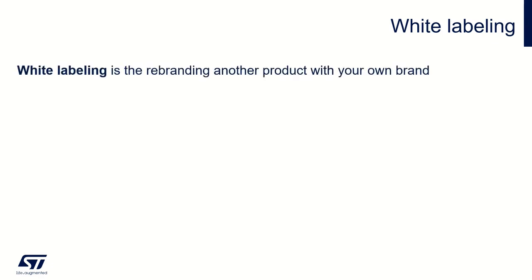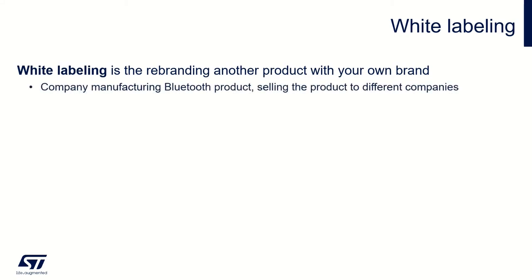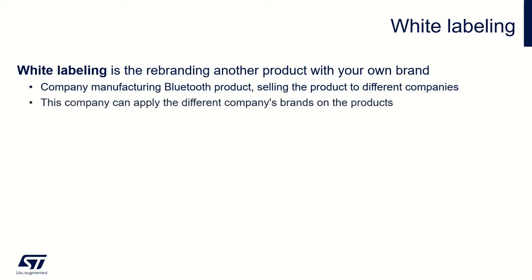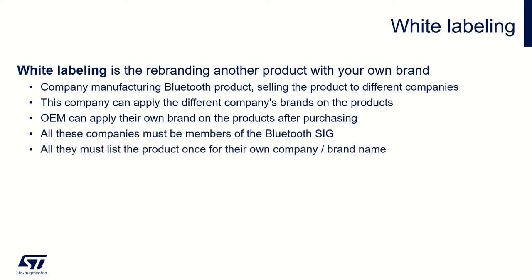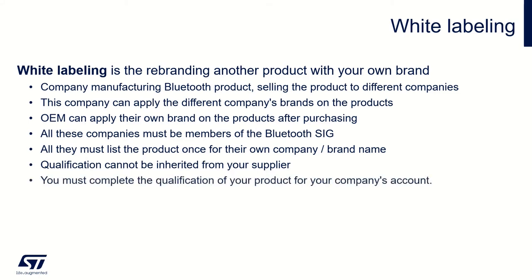The next term is white labeling. It means rebranding another product with your own brand. It happens when a company that manufactures Bluetooth products sells those products to different companies, and an OEM can apply their own brand on the products after purchasing. There is a rule that all companies purchasing or selling must be members of the Bluetooth SIG, and all must list the product once under their own brand name. Importantly, qualification cannot be inherited from the supplier — you must complete the qualification of your product under your own member company's account.